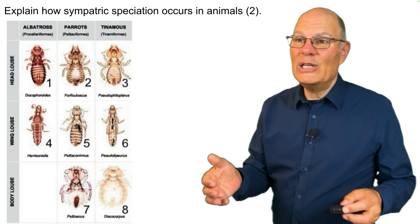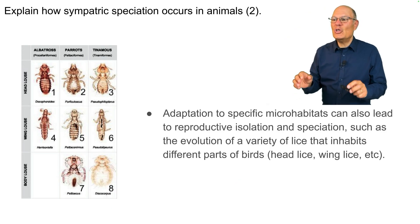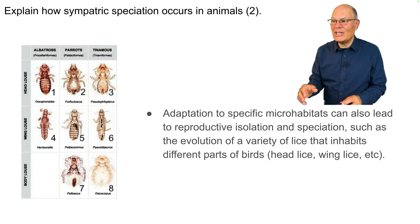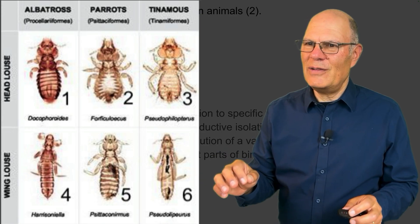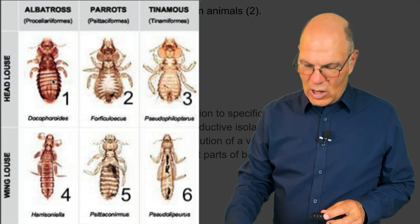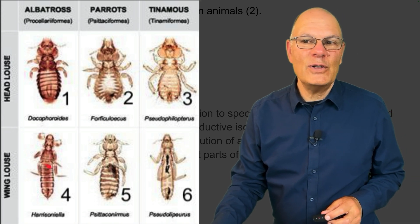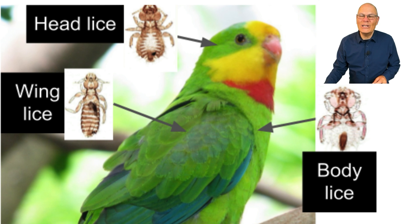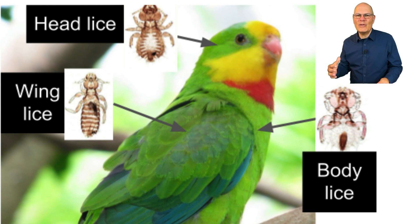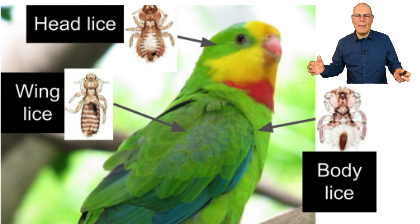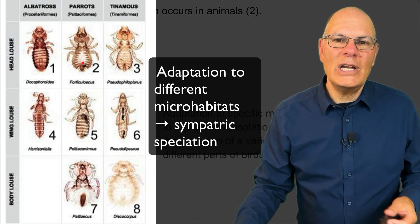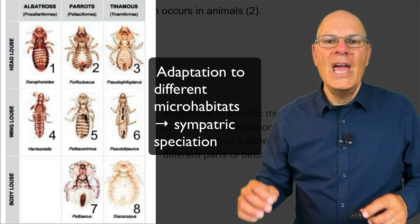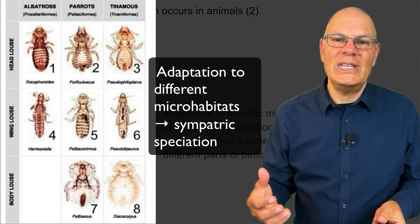Here's another mechanism of sympatric speciation in animals. Adaptation to specific microhabitats can also lead to reproductive isolation and speciation, such as the evolution of a variety of lice that inhabit different parts of birds. There are lice that live only on the head of an albatross, and different species that live on the wings. Other species of lice only live on the heads of parrots, while others live on the wings. These are different species occupying different parts of the bird, and all of these lice are becoming extraordinarily specialized as they adapt, and these specializations are leading to speciation over time.